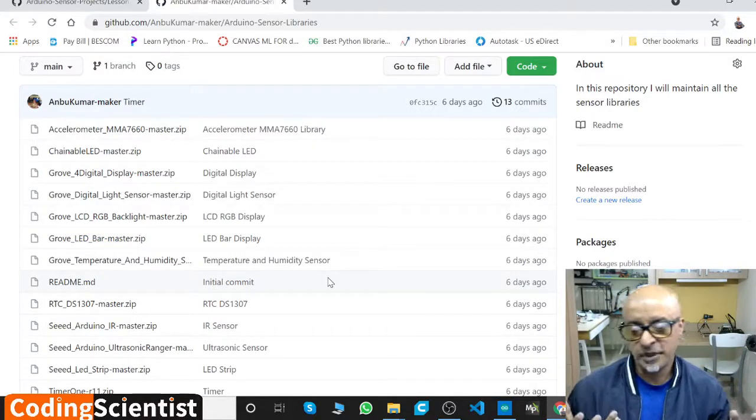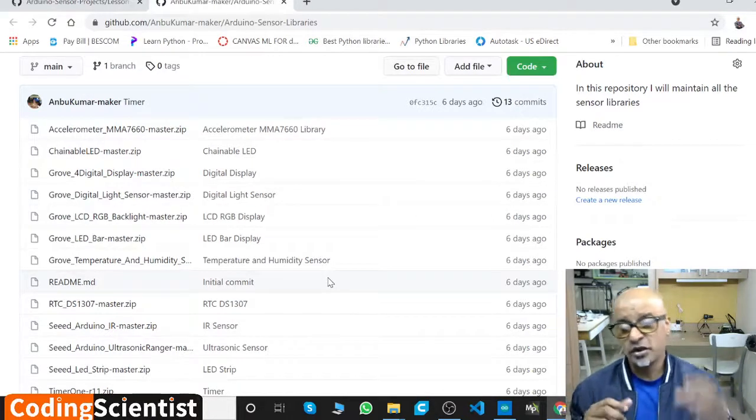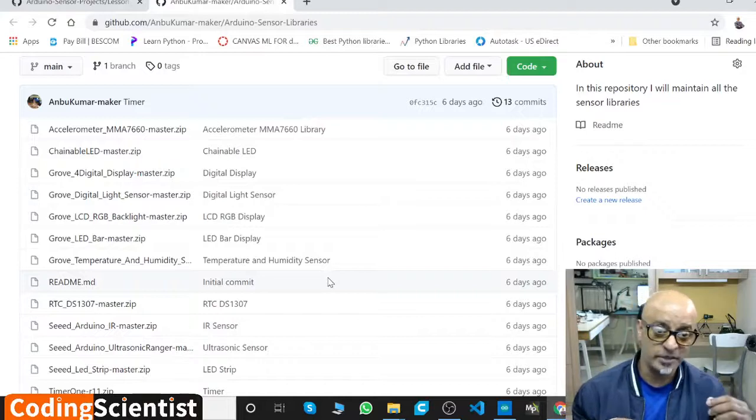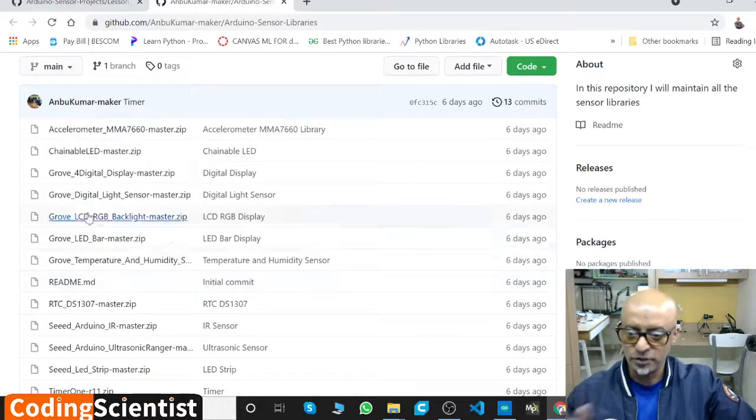You can download this and put it inside the folder where you installed your Arduino IDE. Typically, it should be in C drive or D drive, whichever drive you installed. Go to that folder, double-click, you will find a folder called Libraries.